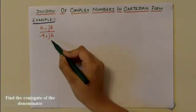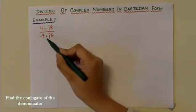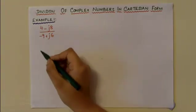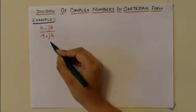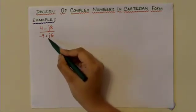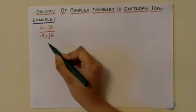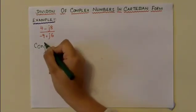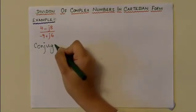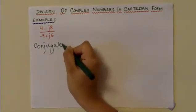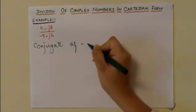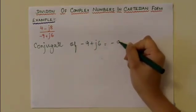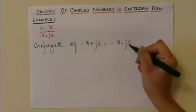First, find out the conjugate of the complex number which is in the denominator. The conjugate of a complex number can be found by inverting the sign of the imaginary part. Therefore, the conjugate of (-9 + j6) is equal to (-9 - j6).